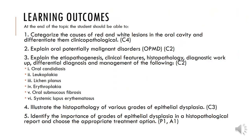The learning outcomes, as discussed earlier, would be to categorize the causes of red and white lesions and to differentiate them clinico-pathologically, and explain oral potentially malignant disorders, which has been covered in part one of this lecture series. We will also explain the etiopathogenesis, clinical features, histopathology, diagnostic workup, differential diagnosis, and management of all of these lesions, and illustrate the histopathology of various grades of epithelial dysplasia, identify the importance of grades of epithelial dysplasia in a histopathological report, and choose appropriate treatment options.